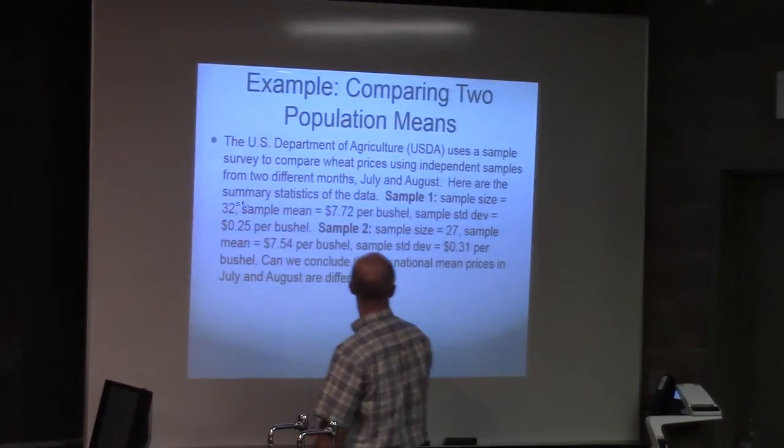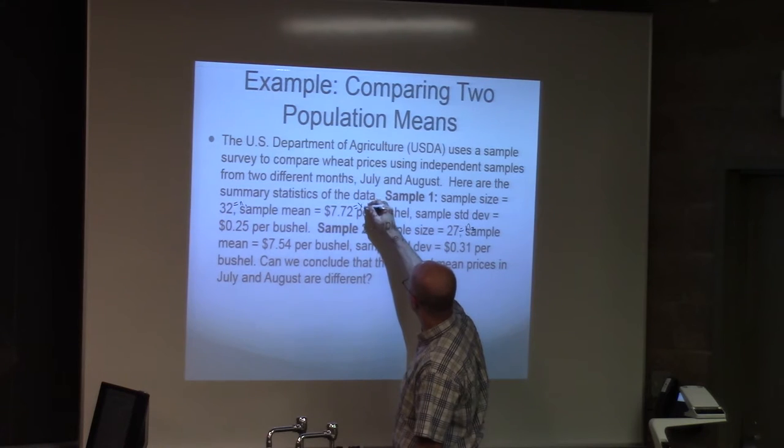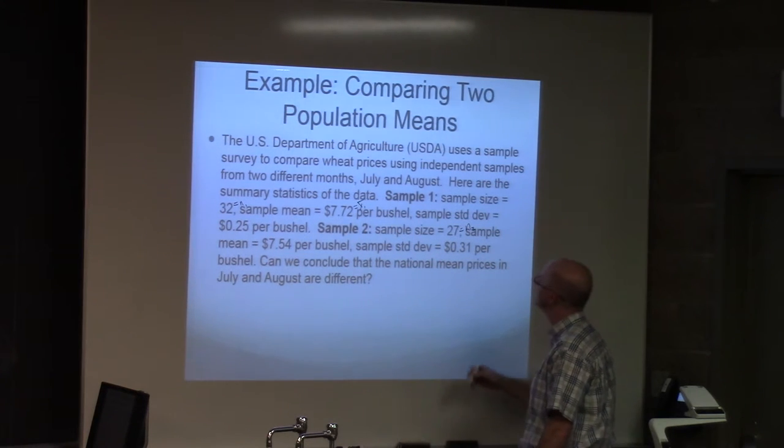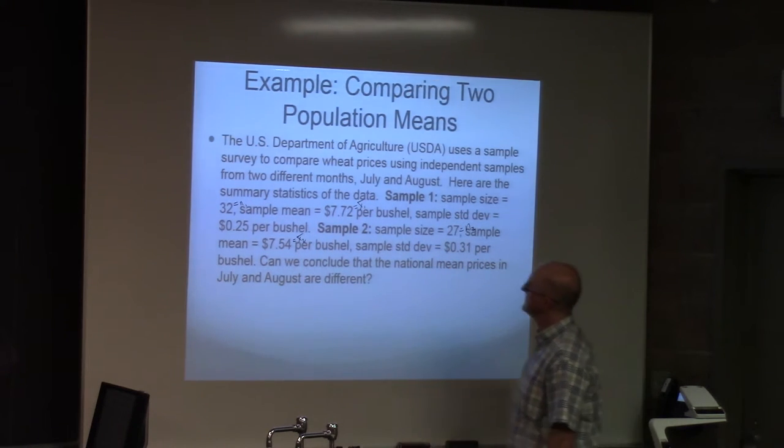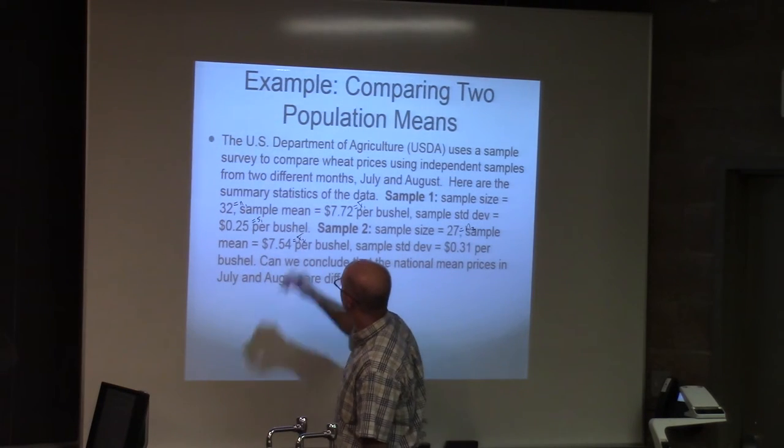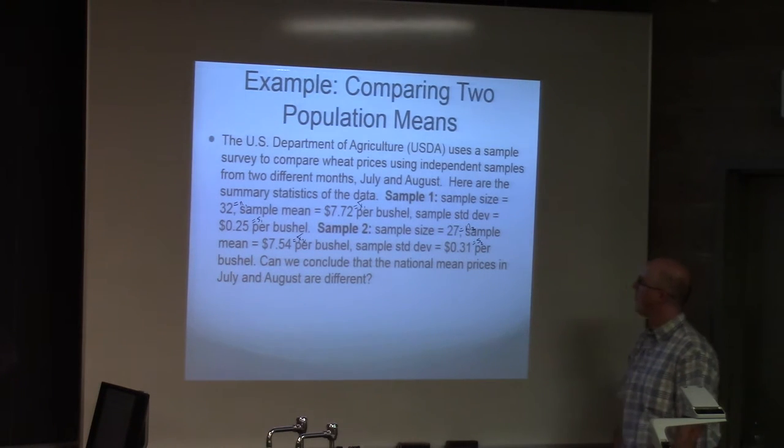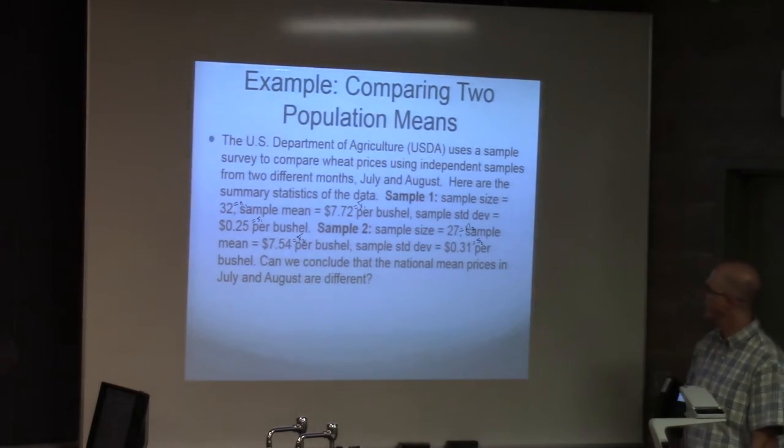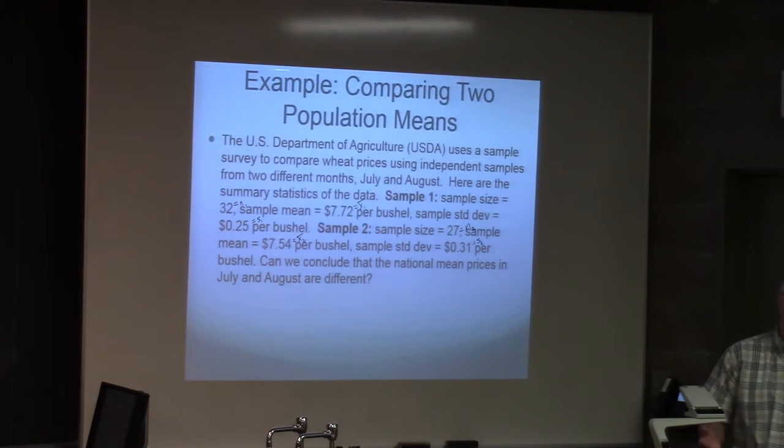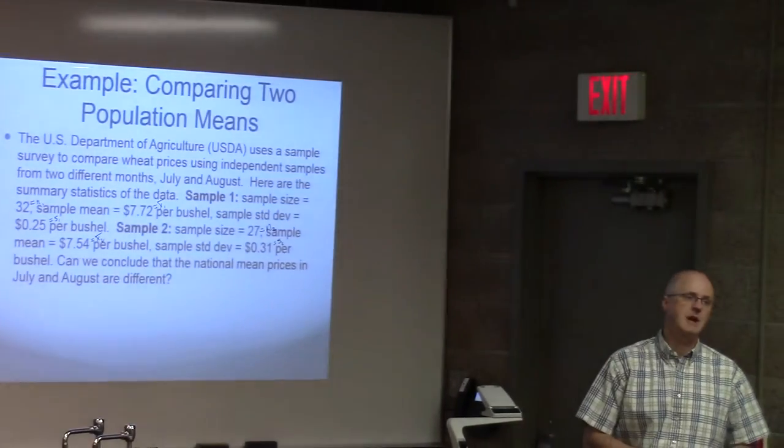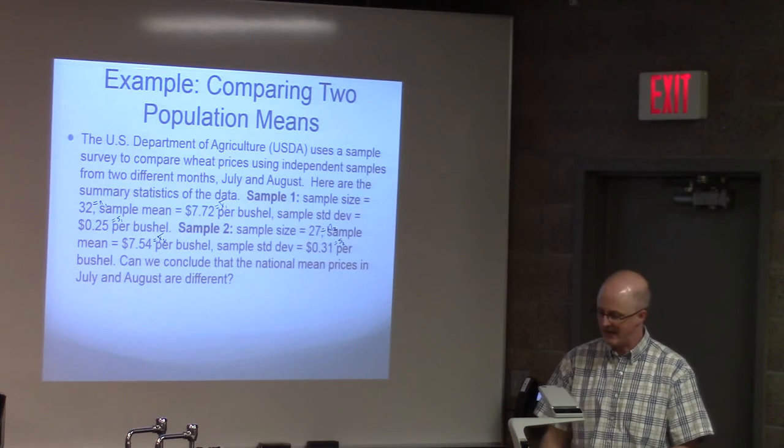The first sample size was 32, the second sample size was 27, with two different sample means. X1 bar was $7.72 per bushel, and X2 bar was $7.54 per bushel. And two sample standard deviations, $0.25 per bushel for S1, and $0.31 per bushel for the second sample. We were wondering, can you conclude from these data that the national mean prices are different for July and August?